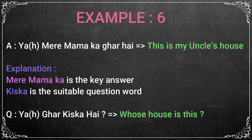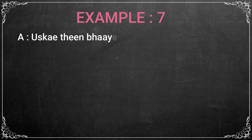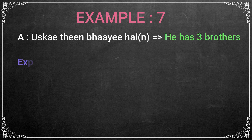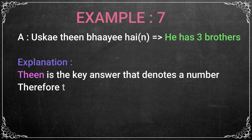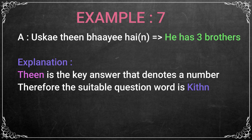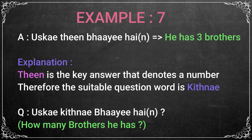Uske Teen Bhai Hai — He has three brothers. Teen is the key answer and denotes a number. Therefore, the suitable question word is Kitne — How many? So the question will be: Uske Kitne Bhai Hai?